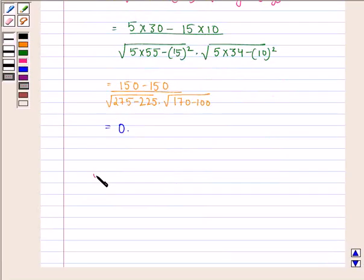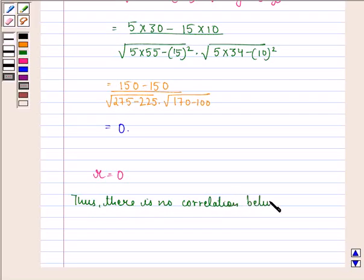So r equals 0. Thus, there is no correlation between x and y. This is our answer to this question. I hope you understood the solution and enjoyed the session. Have a good day.